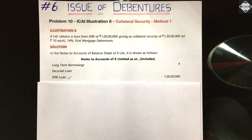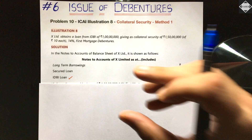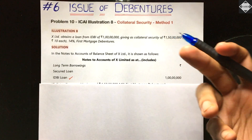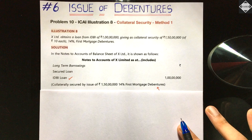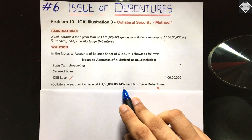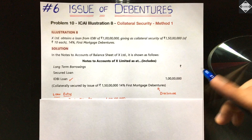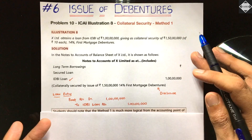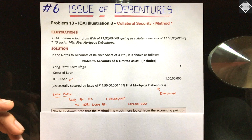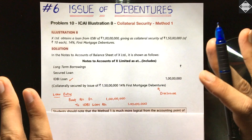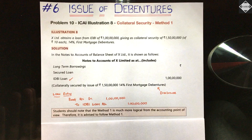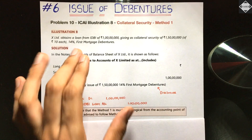See here in the notes to accounts: Long-Term Borrowings — Secured Loan — IDBI Loan: 1 crore, and below that in brackets, 'collaterally secured by issue of 1 crore 50 lakhs 14% first mortgage debentures.' The loan entry is Bank Account to IDBI Loan — 1 crore. Students should note that Method 1 is more logical from the accounting point of view; therefore it is advised to follow Method 1.